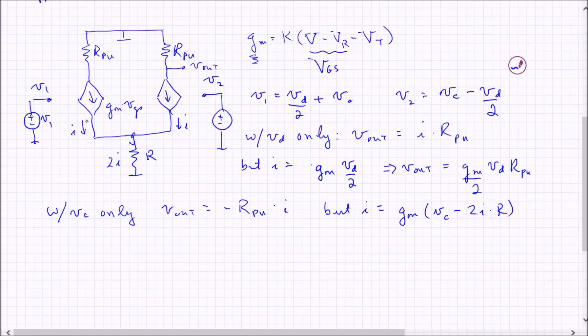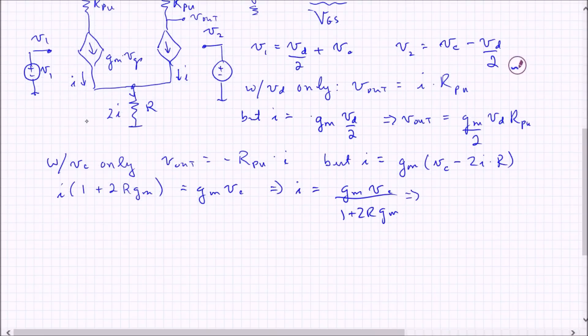All right, well I appears on both sides, so we can rearrange this a little bit and do a little bit of algebra. Take that 2Ir over to the right. Solve for I, and we get GM Vc over 1 plus 2R GM. And so that means that Vout for this case is minus R pull-up GM Vc over that 1 plus 2R GM.